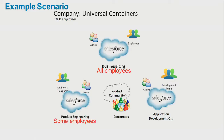The next org is specific to their product engineering department. Universal Containers is a product-based company with a product called Product X. Engineers and designers work on innovating this product. Discussions around Product X happen in the product engineering org, and a subset of all employees is actually part of it.